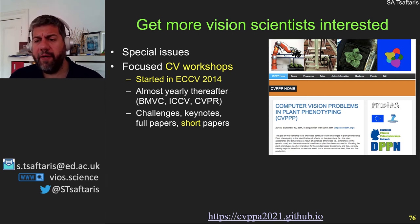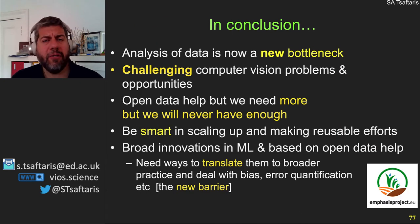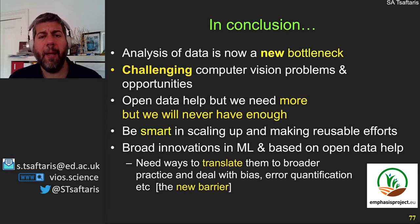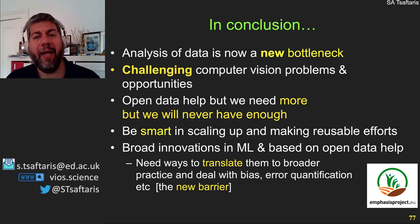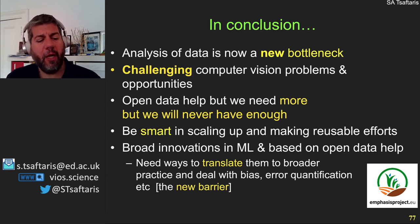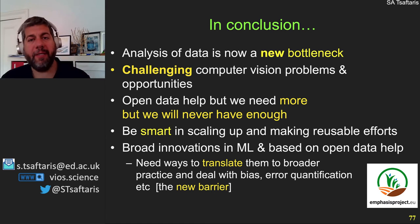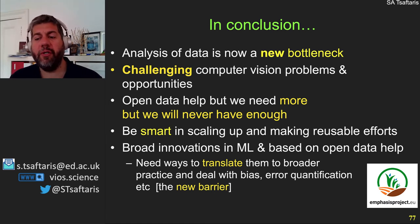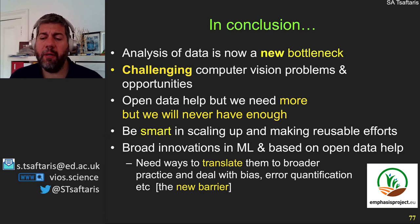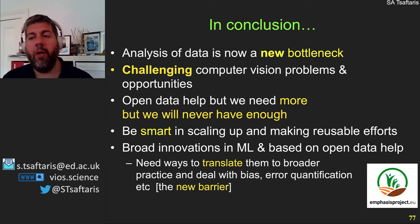To conclude the first part of the talk: analysis of data is now the new bottleneck, and there are very challenging computer vision problems and opportunities. We need to do more to solve these problems — be smart about scaling up solutions and make the efforts we develop reusable. Machine learning will definitely help, but we need more open data, open infrastructures, and open data sources. In general, we need to be more strategic about how we tackle these problems and grow the community of people working on them.